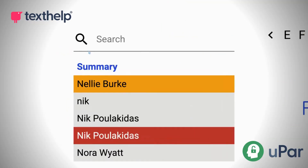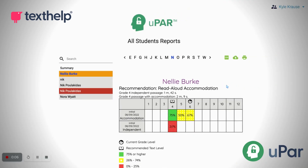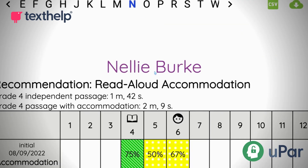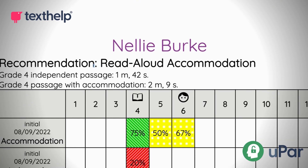To see individual student reports, start by clicking on the student's name. Under the student's name, you'll see the recommendation, grade-level independent passage time, and grade-level accommodation time.